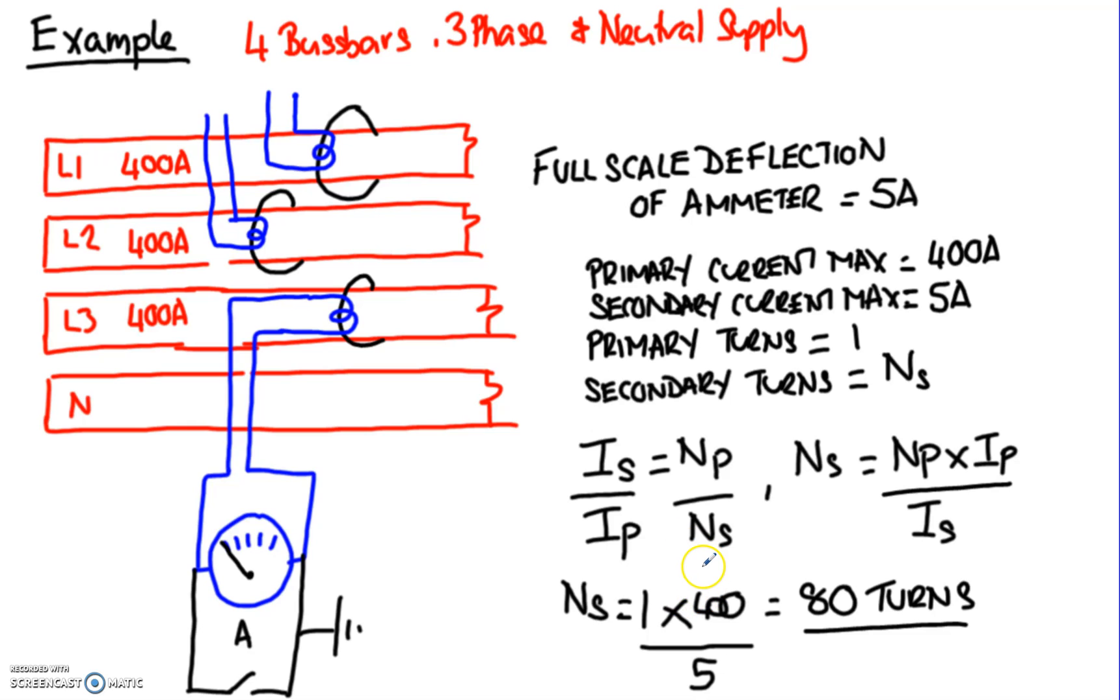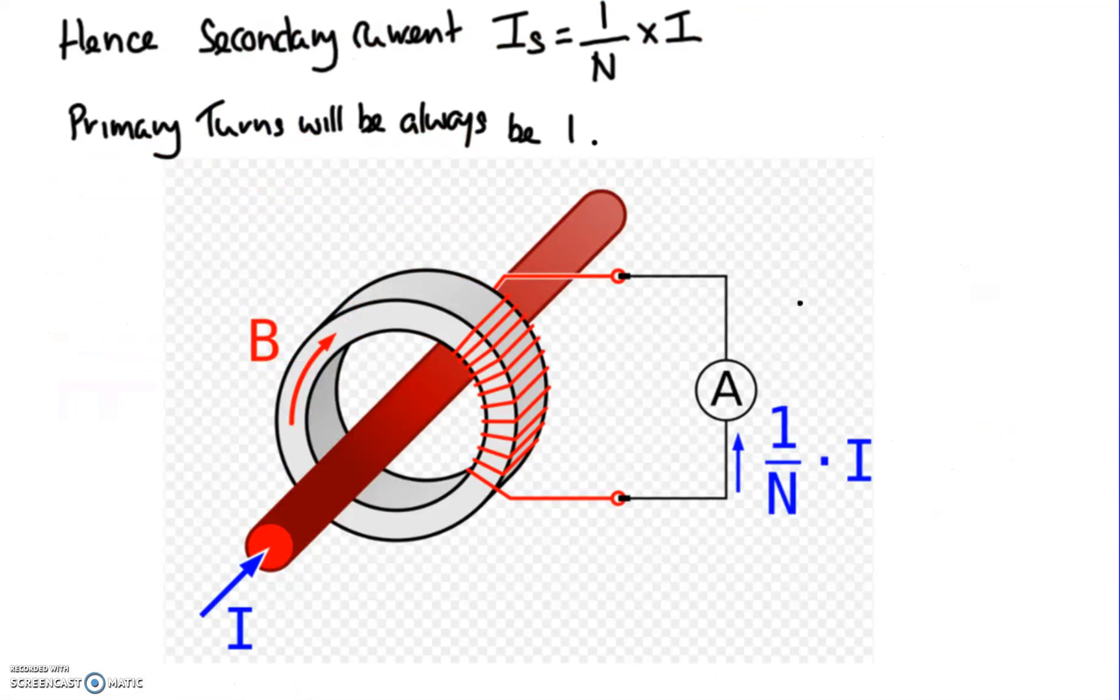If we look at the formula for the number of turns on the secondary, the primary is always going to be one because the primary runs straight through the secondary. We know we want the current to be 5 amps, and the primary current maximum is 400. So in this particular transformer, we're going to need a transformer ratio of 80 amps to 5 amps, 80 to 5.